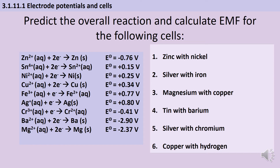This is one of those concepts that makes a lot more sense once you've had a go at it yourself with some numbers. You've got six questions — for each one you need to find the right half equations, decide which one will go in the forward direction and which one will go in the reverse direction so you can write an ionic equation for each reaction, and then also figure out what the overall EMF for the cell will be. Pause the video and have a go now.